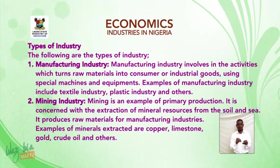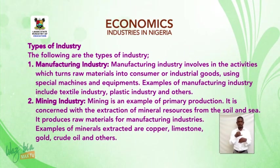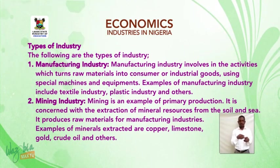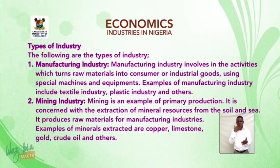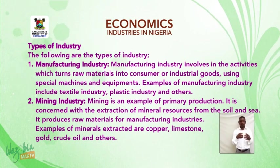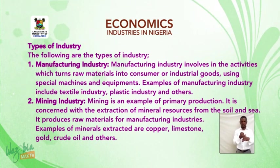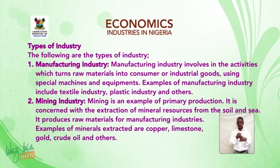Types of industry. Number one: Manufacturing industry. Manufacturing industry involves activities which turn raw materials into consumer or industrial goods using special machines and equipment. Examples of manufacturing industry include textile industry, plastic industry, and others.